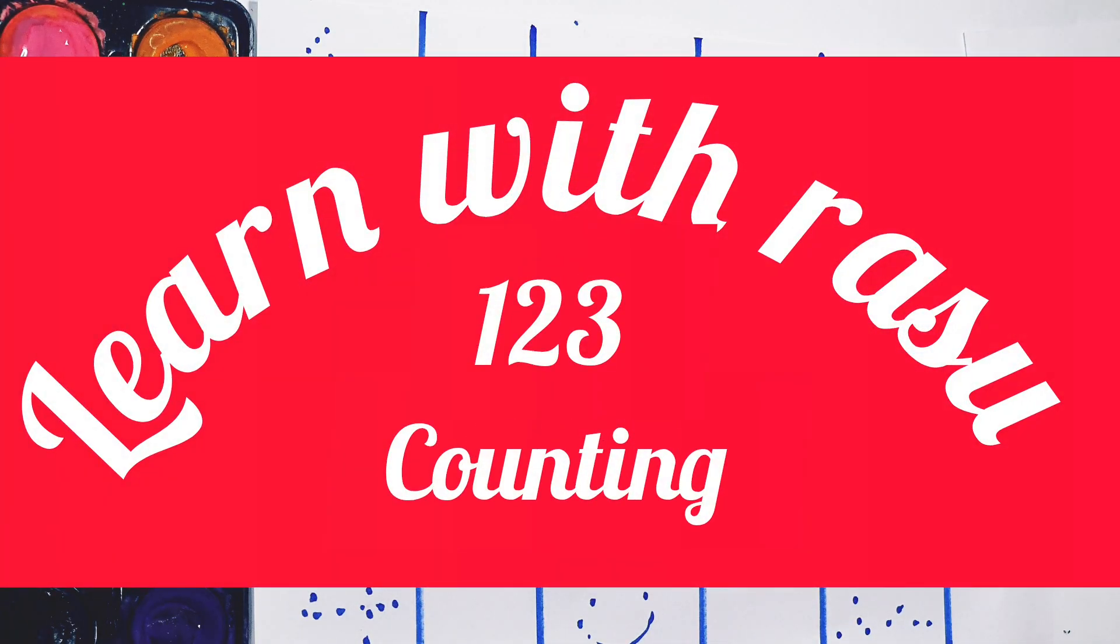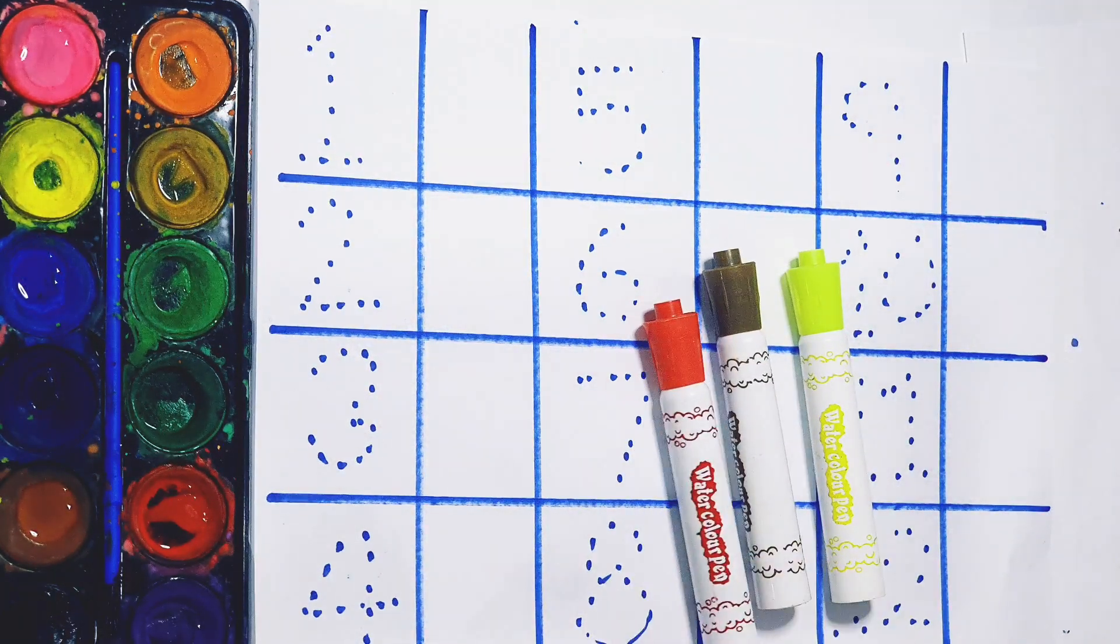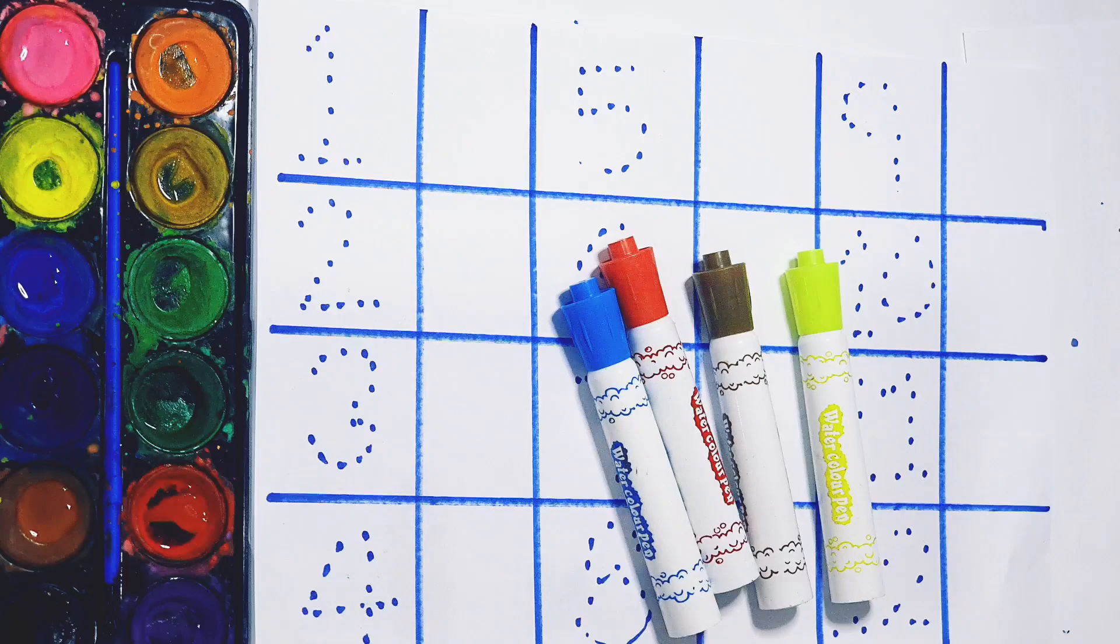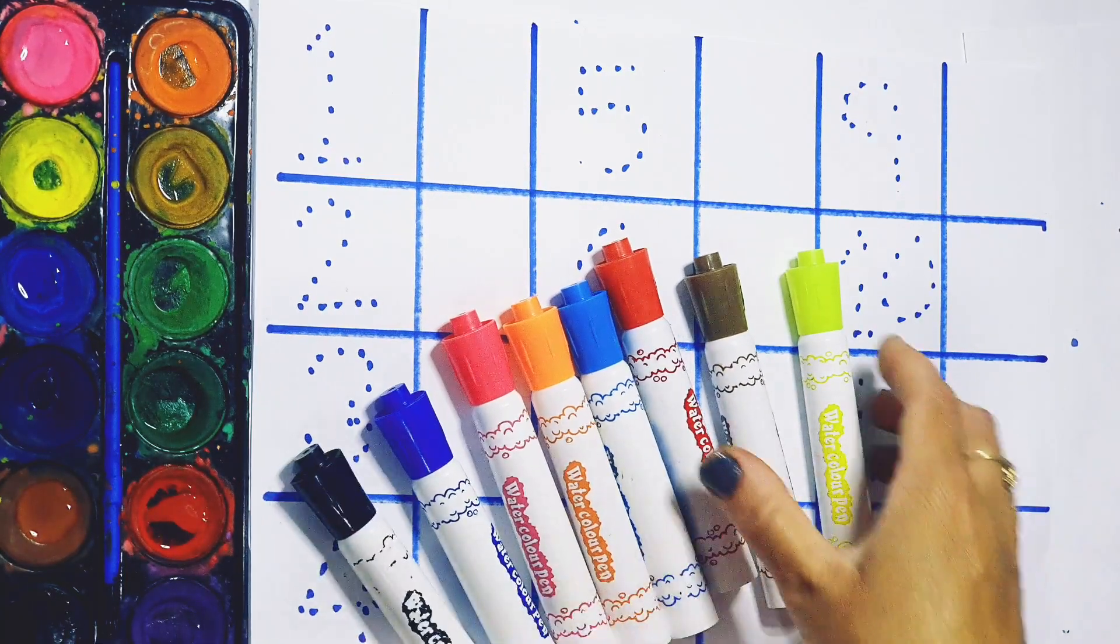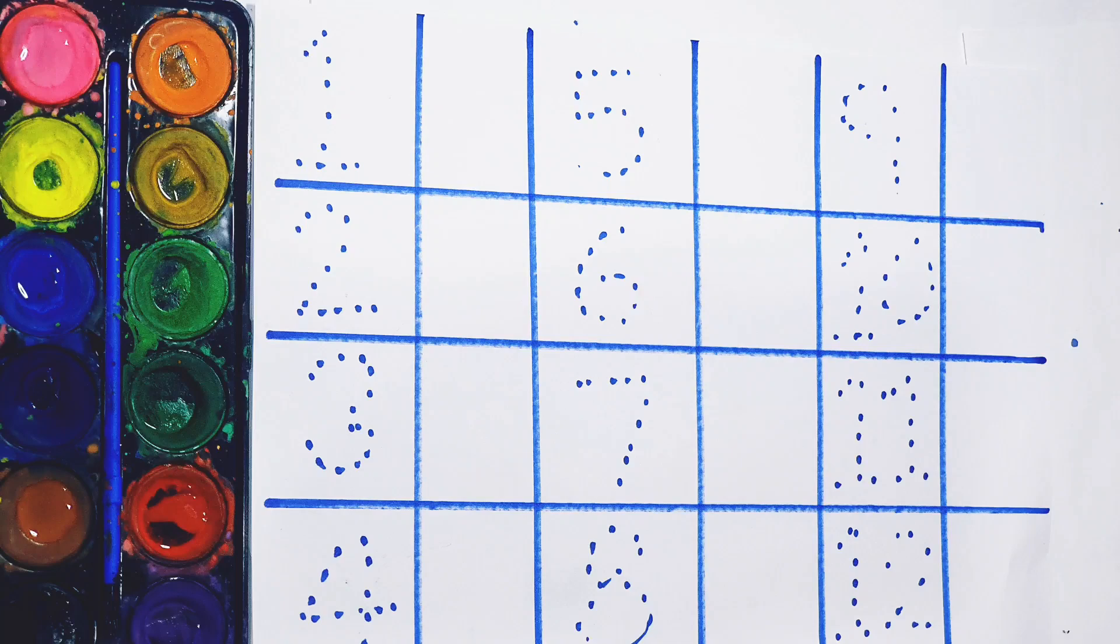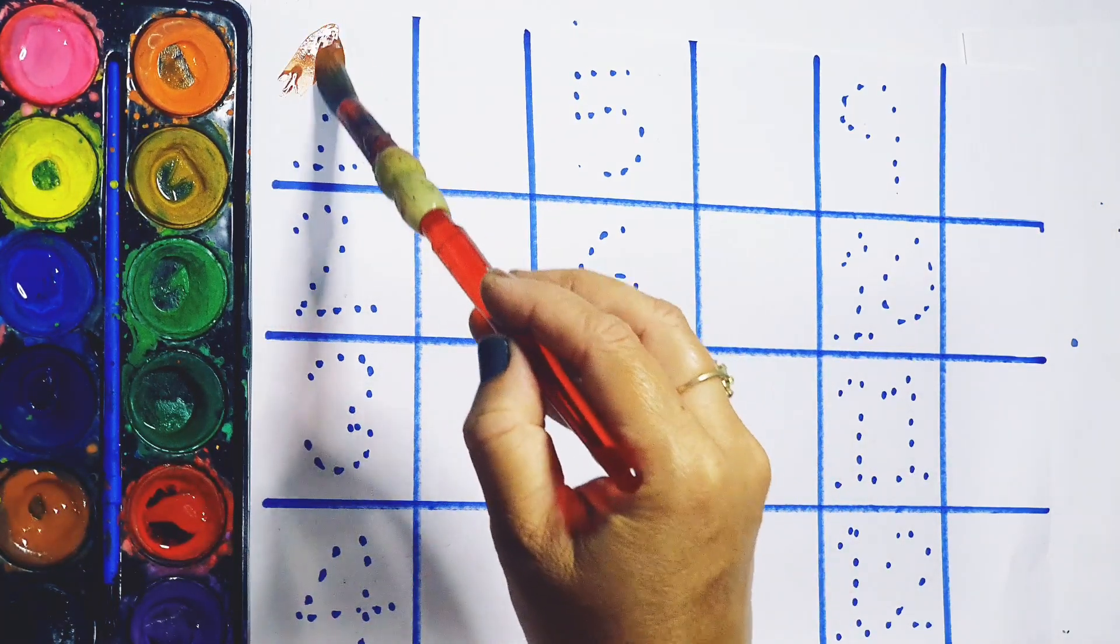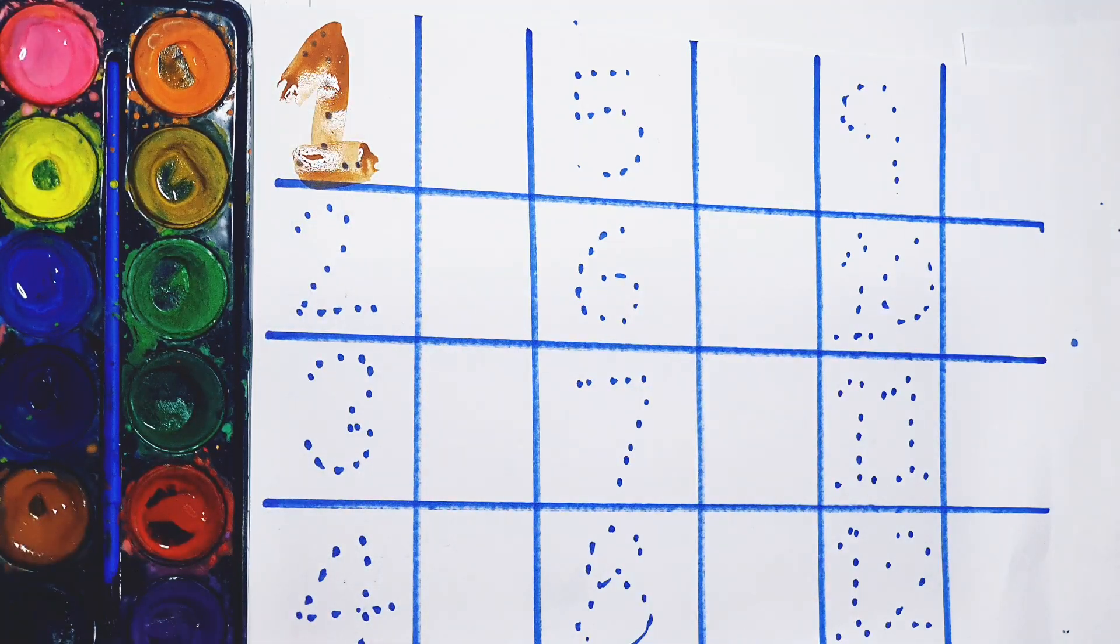Hello kids, welcome to my channel. Today we are going to learn one, two, three counting. Light yellow color, brown color, red color, sky blue color, orange color, pink color, dark blue color, black color. Let's start.